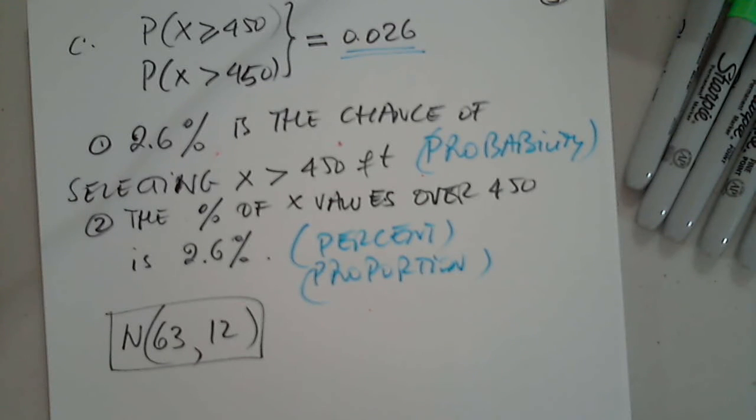Determine whether the graph to the right can represent a variable with a normal distribution. Explain your reasoning. If the graph appears to represent a normal distribution, estimate the mean and standard deviation.